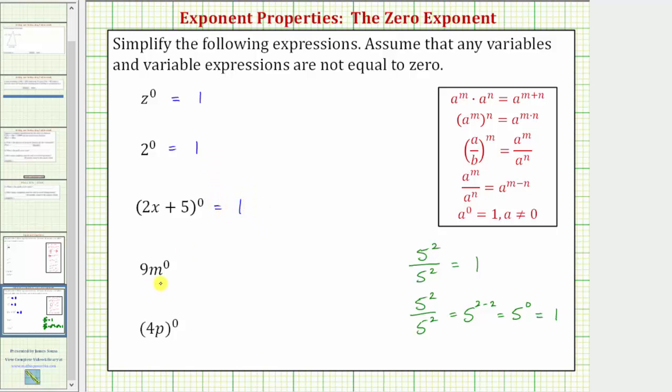Now we need to be careful about this next expression. We have nine m raised to the power of zero. The exponent of zero is only attached to the m, not to the nine. This is really nine to the first, so this is equal to nine times m raised to the power of zero. M raised to the power of zero is equal to one, so this simplifies to nine times one, which equals nine.